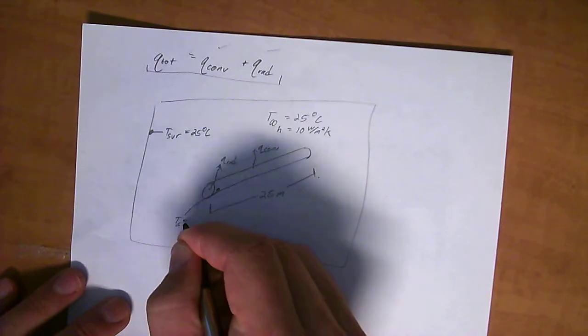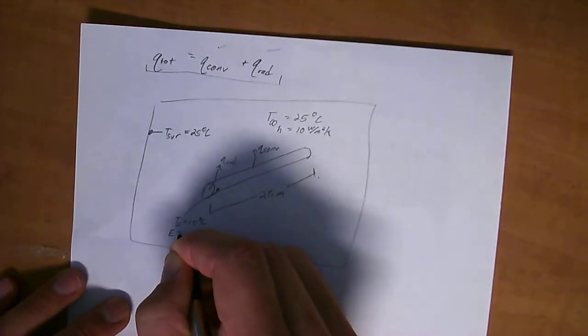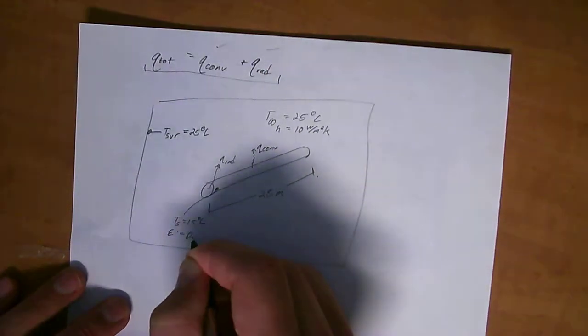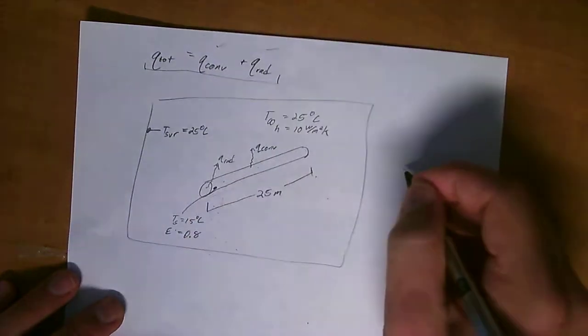So we know that the next little piece of information, the surface of the pipe, T_s, is equal to 150 degrees C. And we know the pipe has an emissivity, a radiation emissivity, equal to 0.8.